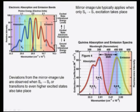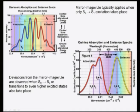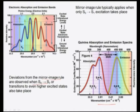The mirror image rule typically applies when S₀ to S₁ transitions take place — excitation and emission/absorption are symmetric. Deviation from the mirror image rule can be observed, though rarely, when S₀ to S₂ or higher excited state transitions occur. Normally, the symmetric mirror image feature is observed in most cases.